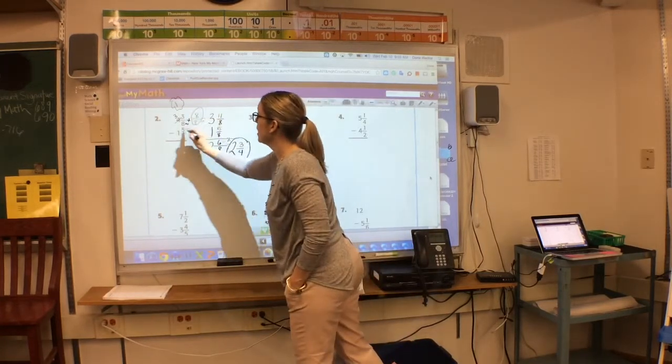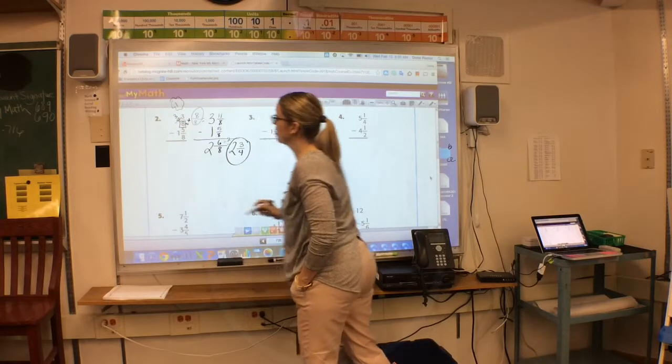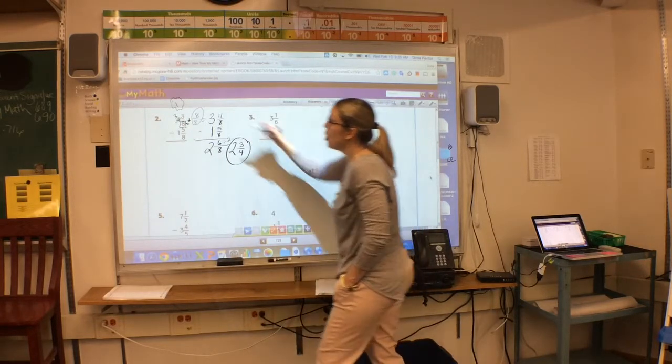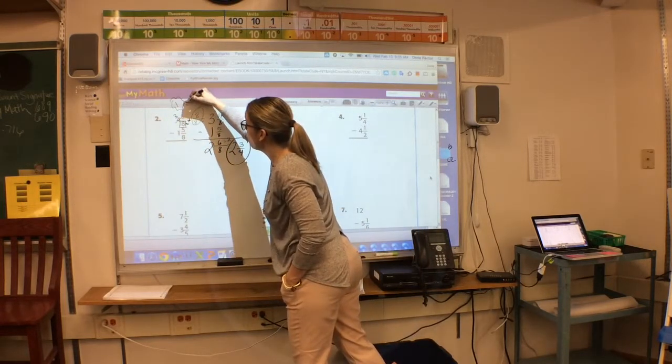How did I come up with this 8 eighths? I look right here at my denominator. That denominator tells me what to turn this whole into.